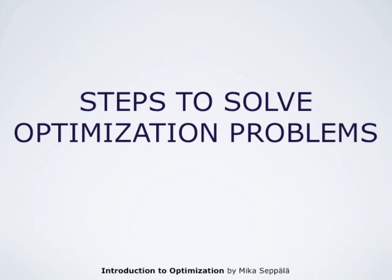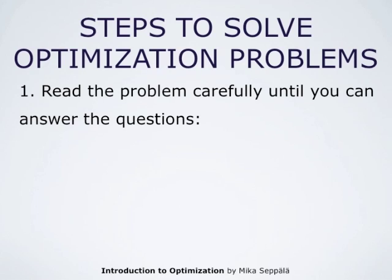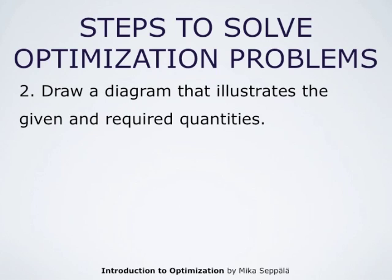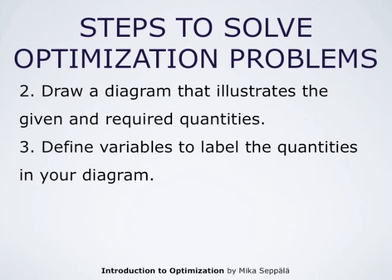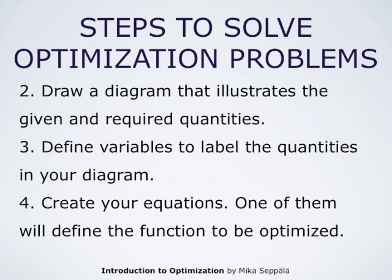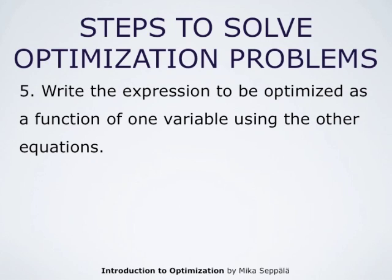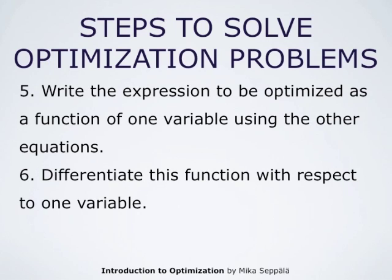Optimization problems are almost always solved by using the following steps. First, one has to read the problem carefully until one can answer the questions: what are the given quantities, what are the given conditions, and what is the unknown. Once one has understood all that, one can draw a diagram that illustrates the given and required quantities. One can define variables to label the quantities in the diagram and create equations, one of which defines the function to be optimized. Then one writes the expression to be optimized as a function of one variable only, and differentiates this function to find maximum or minimum values.